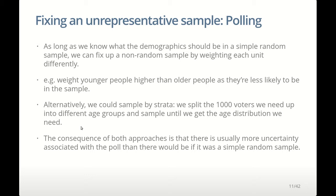For example, if we're using landlines to contact likely voters, we know young people are unlikely to end up in our sample and older people are more likely. So when we get young people in our sample, we might count them more — maybe every young person counts four times — replicating their result to cancel out the fact that we don't get enough young people. Alternatively, we could sample by strata, sampling until we get the age, gender, and ethnicity distribution that we want.